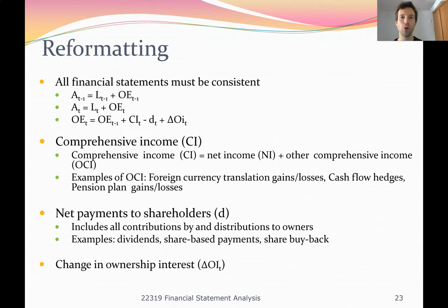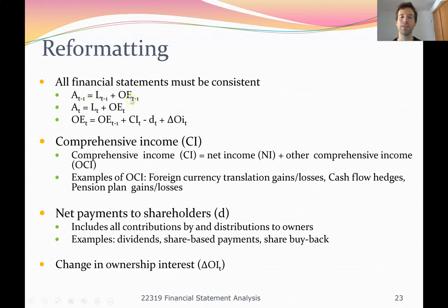Before we get into the process of reformatting, we need all our financial statements to be consistent and to follow accounting principles. Assets equals liabilities plus owner's equity. The subscript T minus one means last year's values, and in time T, this year's assets equals liabilities plus owner's equity. This confirms that throughout time, each year, the balance sheet equation — the accounting equation — will hold.